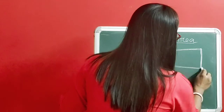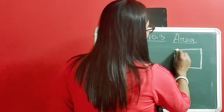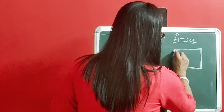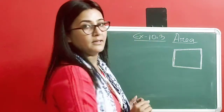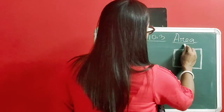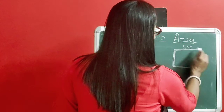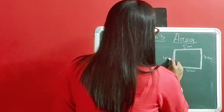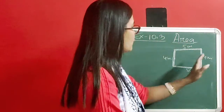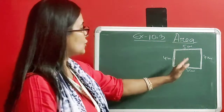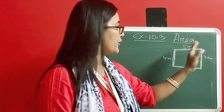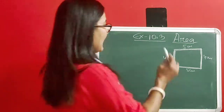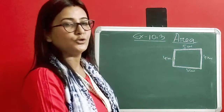For this figure, this outer distance is the perimeter. Suppose the sides are 5 cm, 4 cm, 5 cm, and 4 cm. So the perimeter is 5 plus 4 plus 5 plus 4, which equals 18. That is the perimeter. Now, what is area?